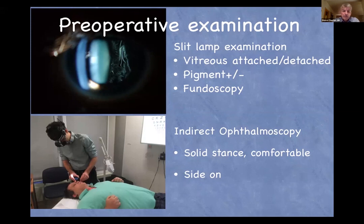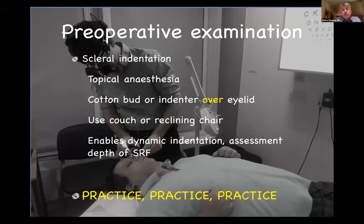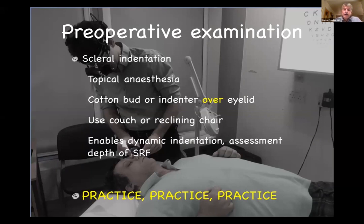It is terribly important to practise indirect ophthalmoscopy. Here you can see one of our fellows with a nice solid stance, side on — you should be feeling comfortable so you're not getting any backache at all. You should be practising scleral indentation, putting some drops of anaesthetic on the eye and using a cotton bud or an indenter over the eyelid. A cotton bud is more comfortable for the patient and is sterile — I'd recommend it. Use a couch or reclining chair. Practice scleral indentation because it enables dynamic assessment of the depth of sub-retinal fluid.